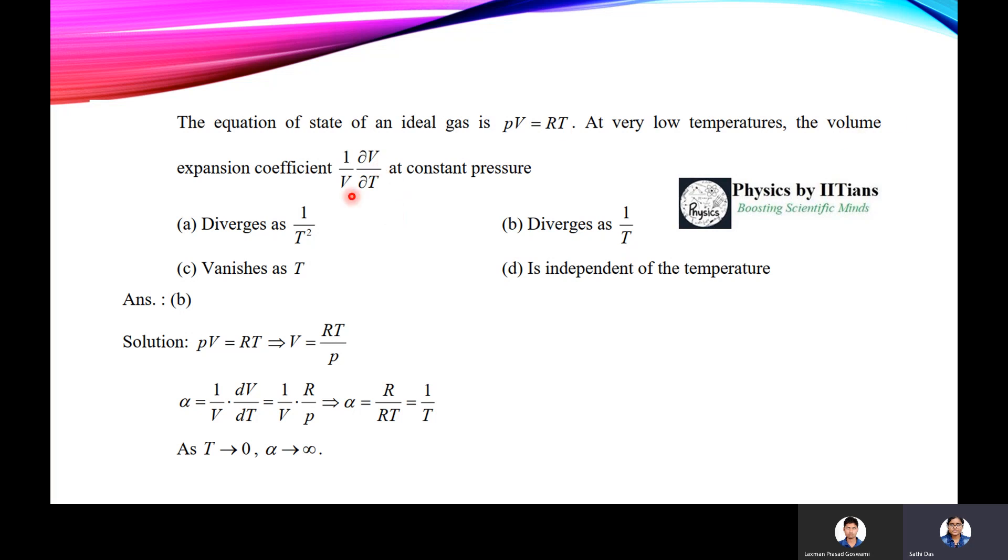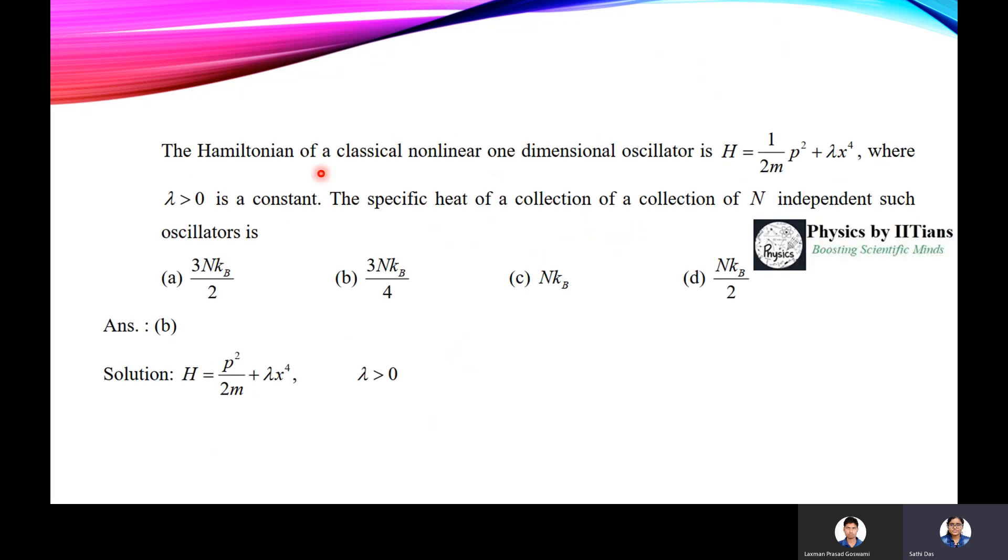So you should know that volume expansion coefficient expression is 1 by V del V by del T, or it can be written as alpha. Given equation of state is PV equals RT, so we can write V as RT by P. So alpha equals 1 by V dV by dT, that can be written as 1 by V into R by P, as dV by dT is R by P. So alpha is R by RT, or 1 by T. Now as T tends to 0, alpha becomes infinite. So B, that is alpha will diverge as 1 by T.